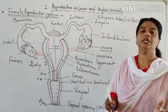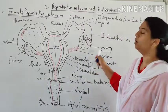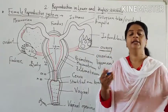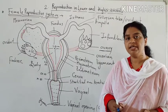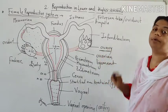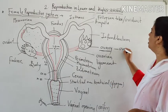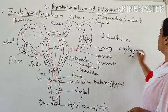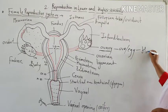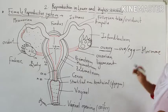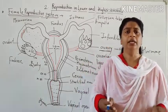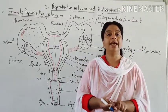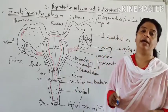The first organ is the ovary. The ovary is the primary female sex organ. Just like the testis is the primary sex organ in the male, the ovary is the primary sex organ in the female. It produces ova or eggs, and it also produces hormones. There are four types of hormones secreted by the ovary: estrogen, progesterone, inhibin, and relaxin.